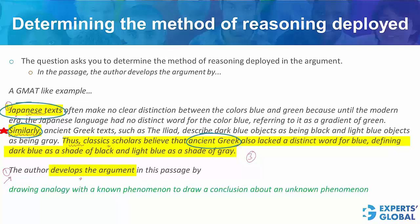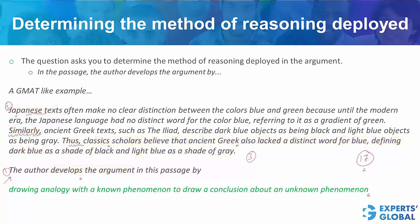Here is the correct answer choice. We will be studying some 17 types of reasoning in this session, so in the interest of brevity, I will be only discussing the correct answer choices. Look at this correct answer choice: 'drawing analogy' is what we were looking for. This is the key phrase — drawing analogy with a known phenomenon, which is Japanese text, to draw a conclusion about an unknown phenomenon, which is the Greek text. This is the correct answer choice.